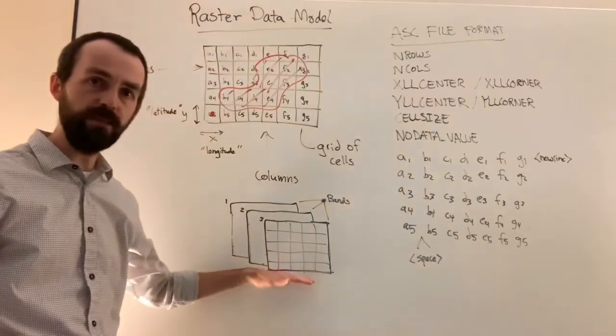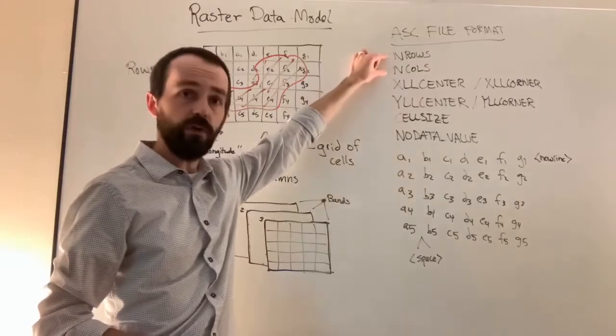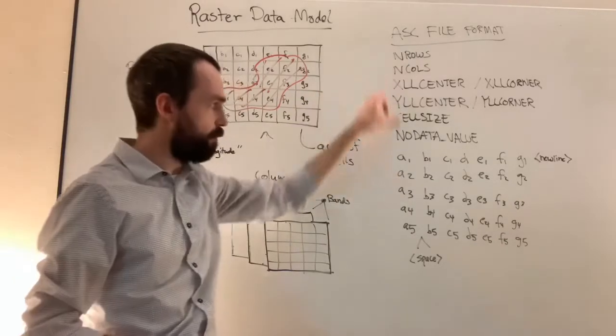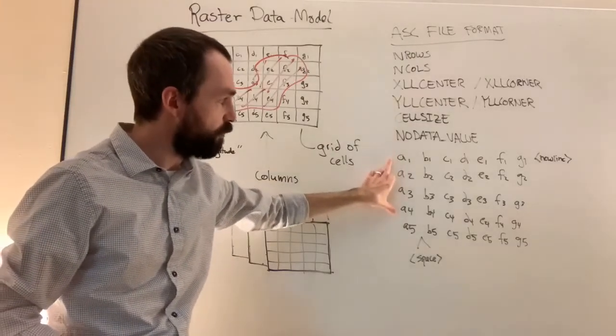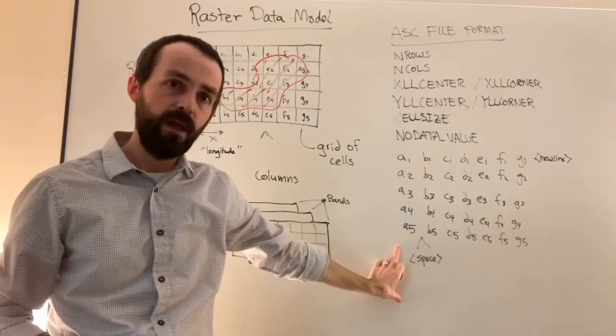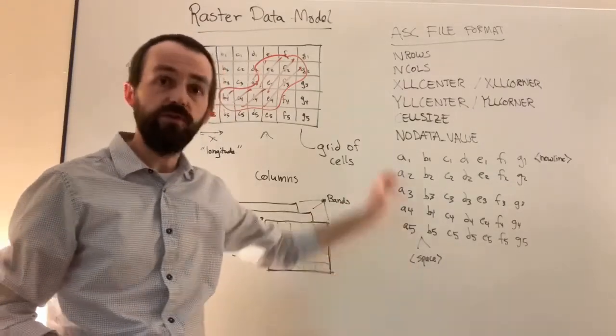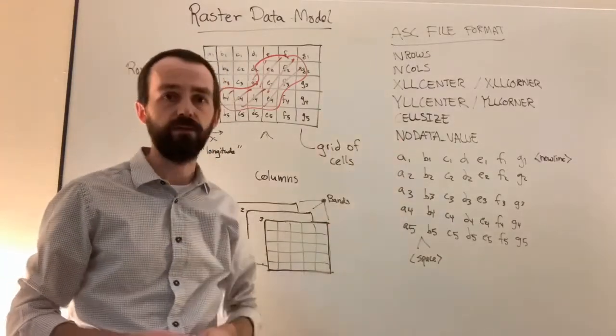How do we translate multi-band into a plain text raster? We have n rows and n columns defined, so it knows exactly how big this data set is supposed to be. If we were to then duplicate this underneath here, that would be band two. So we'd have band one and band two. So you can make multi-band rasters in ACI raster format.